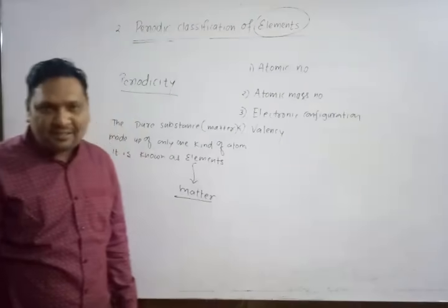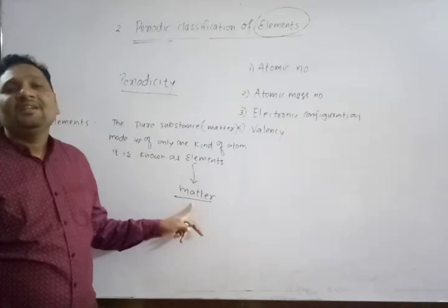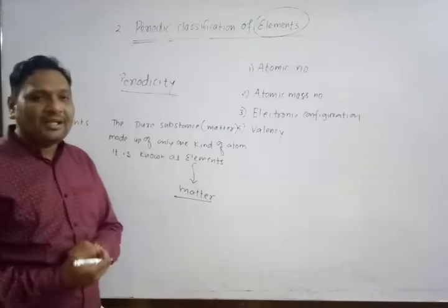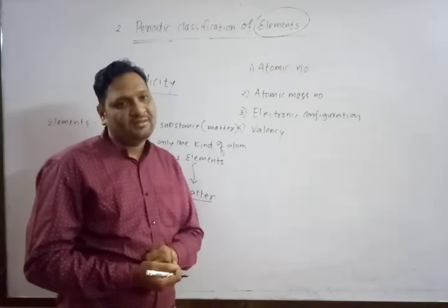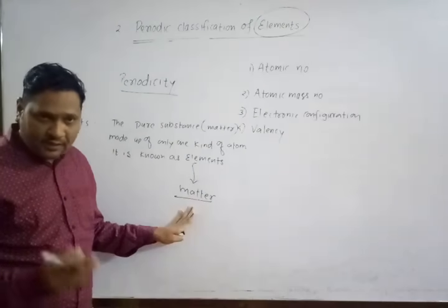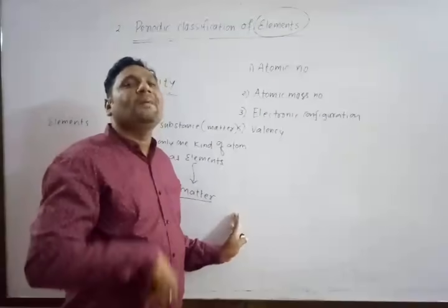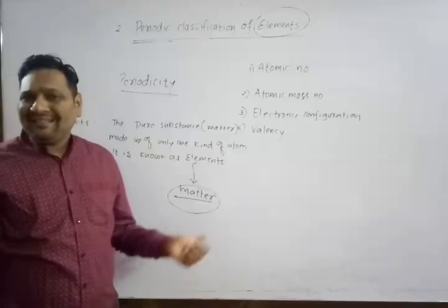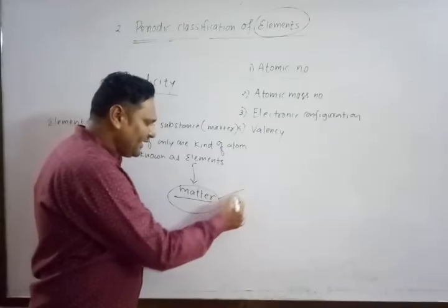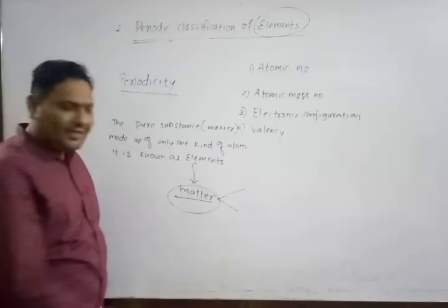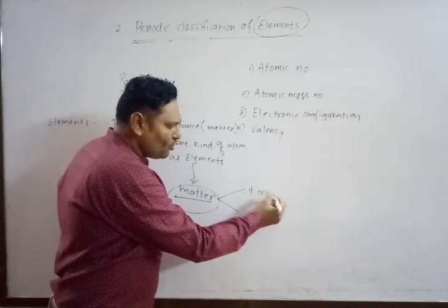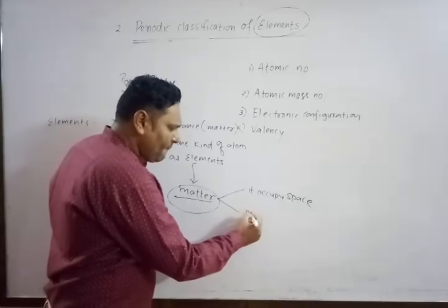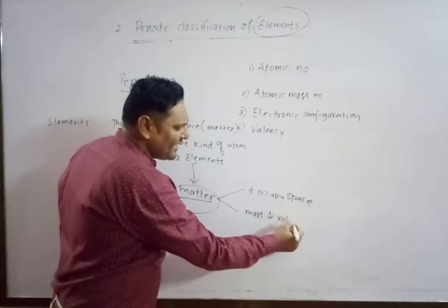Do you know what exactly matter means? Matter is nothing but anything around us which we can perceive by our sense organs. Matter has two important properties: it occupies space, and it has mass and volume.